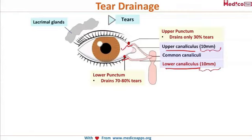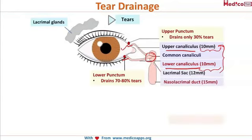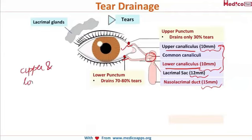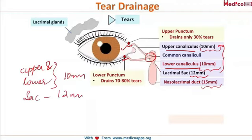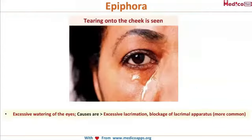An important point to remember is the length of the canaliculi. The upper canaliculus and the lower canaliculus both measure 10 mm each. These two canaliculi open into the common canaliculus, which opens into the lacrimal sac. The lacrimal sac is about 12 mm, and then it opens into the nasolacrimal duct, which is about 15 mm. So: canaliculi = 10 mm, lacrimal sac = 12 mm, nasolacrimal duct = 15 mm.